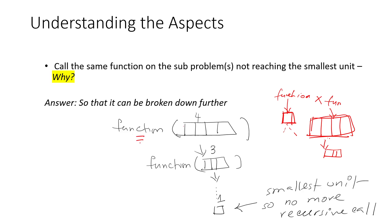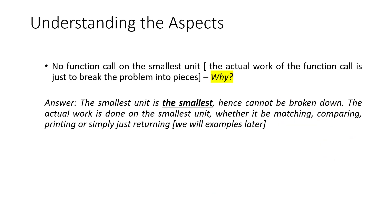So what we do is: sub-problems which have not reached the smallest unit — we call the function, the recursion call, on these sub-problems so that these sub-problems can break down into smaller sub-problems at each step. I have a function and a sub-problem of size 4, and at every recursion call the problem size gets smaller until it reaches 1. In some problems we may keep 1 as the smallest unit, and in some problems it might be 0 — it depends on the problem. The third point is: no function call on the smallest unit. We don't call the function on a smallest unit because it does not make sense — recursive call on the smallest unit means the problem size is already smallest. That's why we don't do a recursive call on the smallest unit.